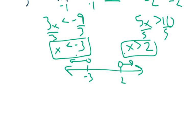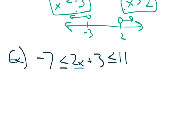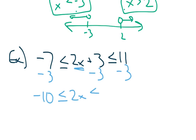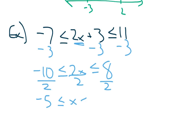For an 'and' inequality, you work with everything together. For example: −7 ≤ 2x + 3 ≤ 11. Subtract three from all three components to get −10 ≤ 2x ≤ 8. Then divide everything by two to get −5 ≤ x ≤ 4. Graph with closed circles at negative five and four, connected — because it's an 'and'.